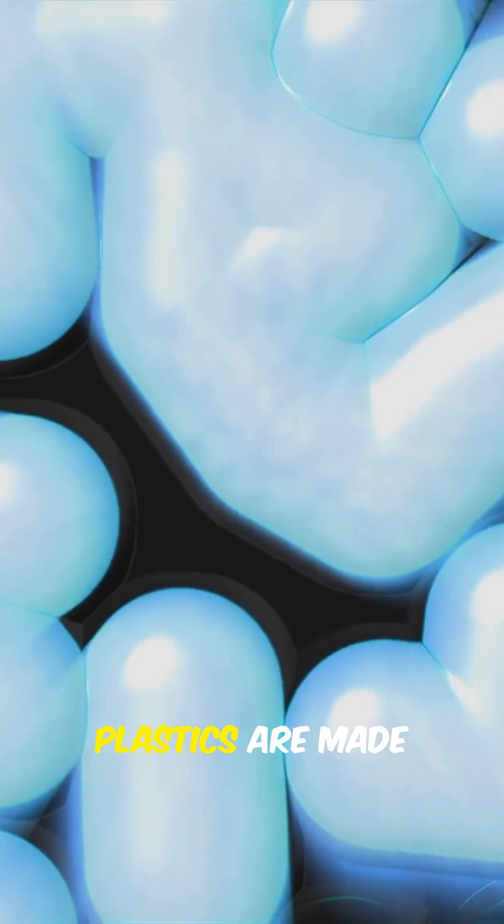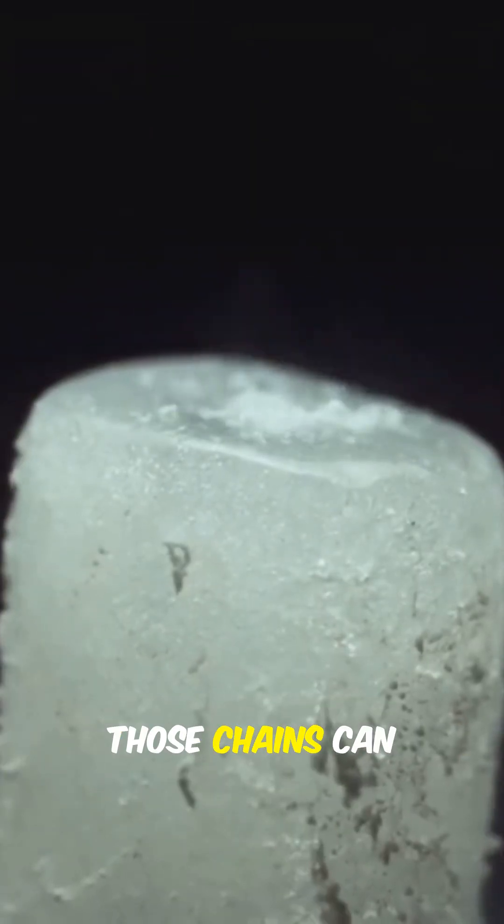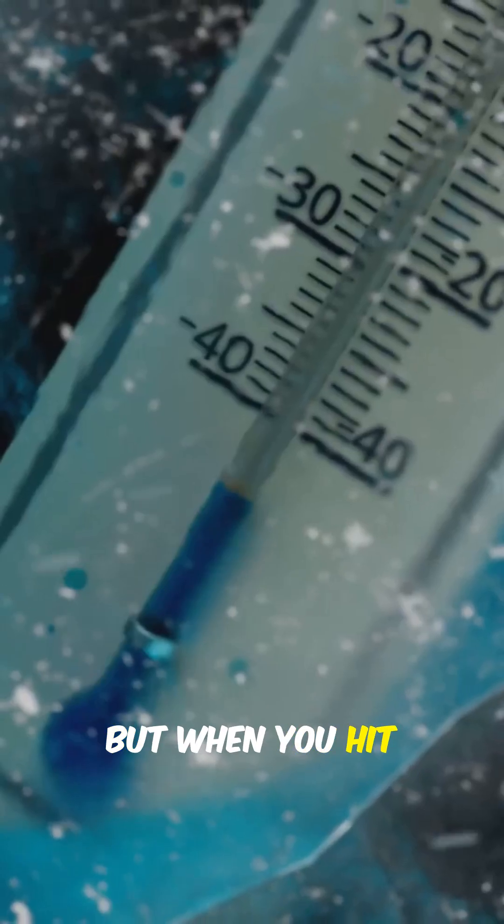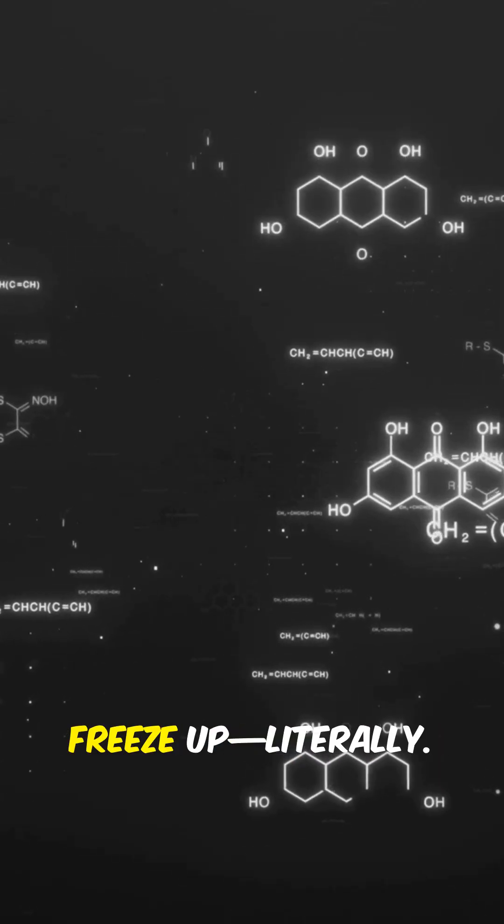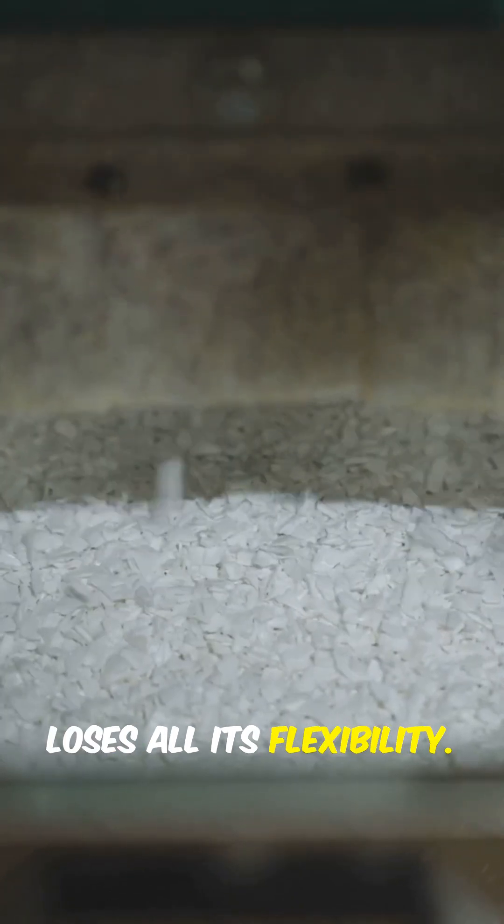Why? Well, plastics are made of long chains of molecules. At normal temperatures, those chains can wiggle around a bit, which is why plastic is kind of soft. But when you hit minus 100, everything slows down. The molecules freeze up, literally. There's no room to move, so the plastic loses all its flexibility.